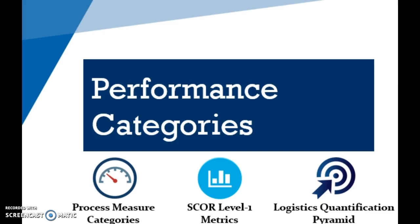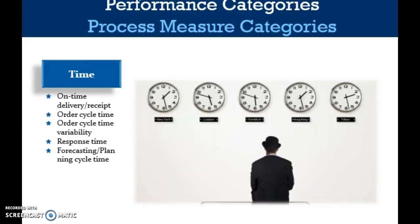Let's look at some performance categories. Time has traditionally been given attention as an important indicator of logistics performance, especially with regard to measuring effectiveness. There are five widely used metrics for time: on-time delivery or receipt, order cycle time, order cycle time variability, response time, and forecasting/planning cycle time. These metrics capture two elements of time: the elapsed time for the activity and the reliability or variability for the activity.